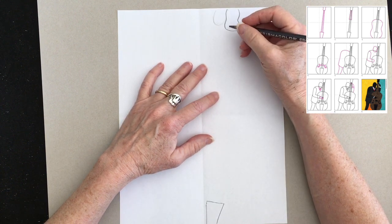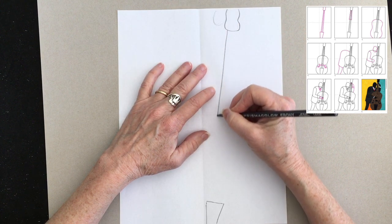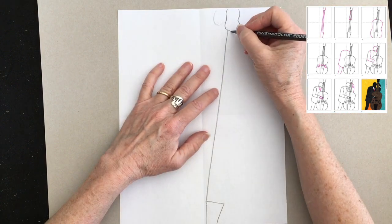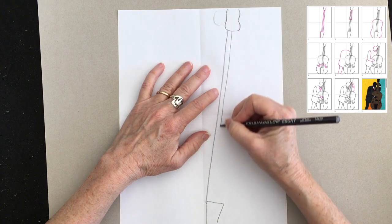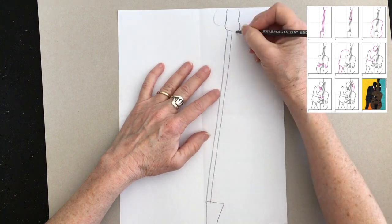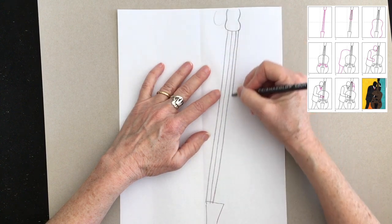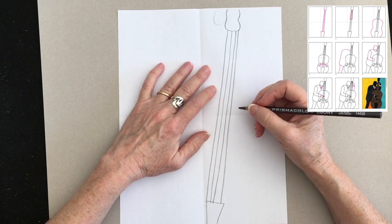And now I'm going to include four strings, even though the directions only show three, because a bass does have four strings. I'm letting my whole wrist, my whole arm, touch the paper as I pull it down, and that helps me make my lines kind of straight. They don't need to be super straight.